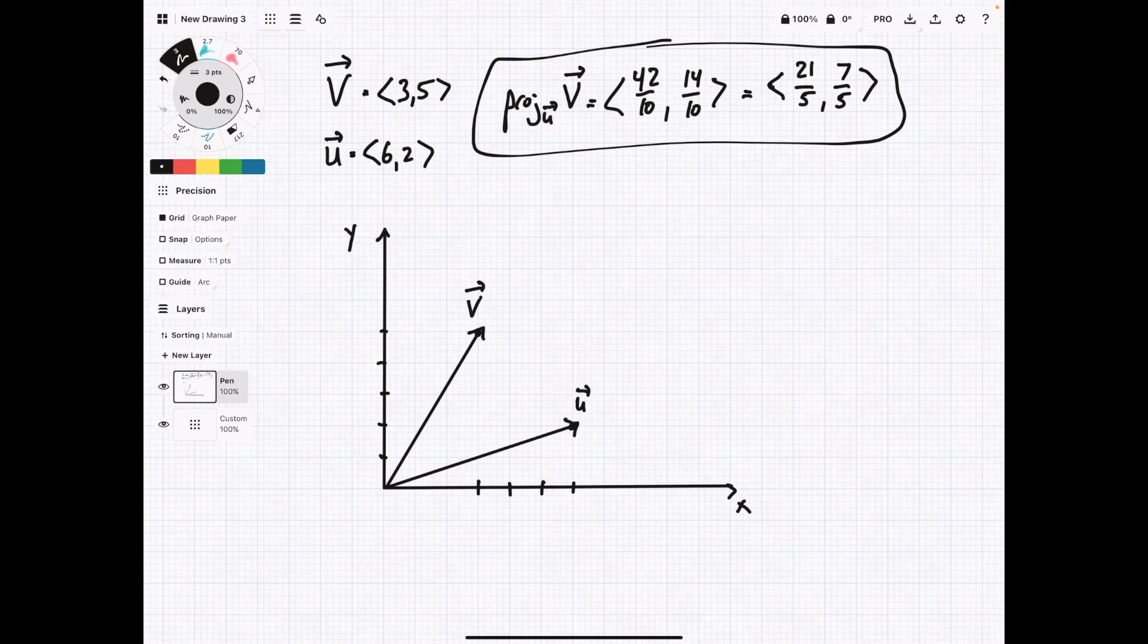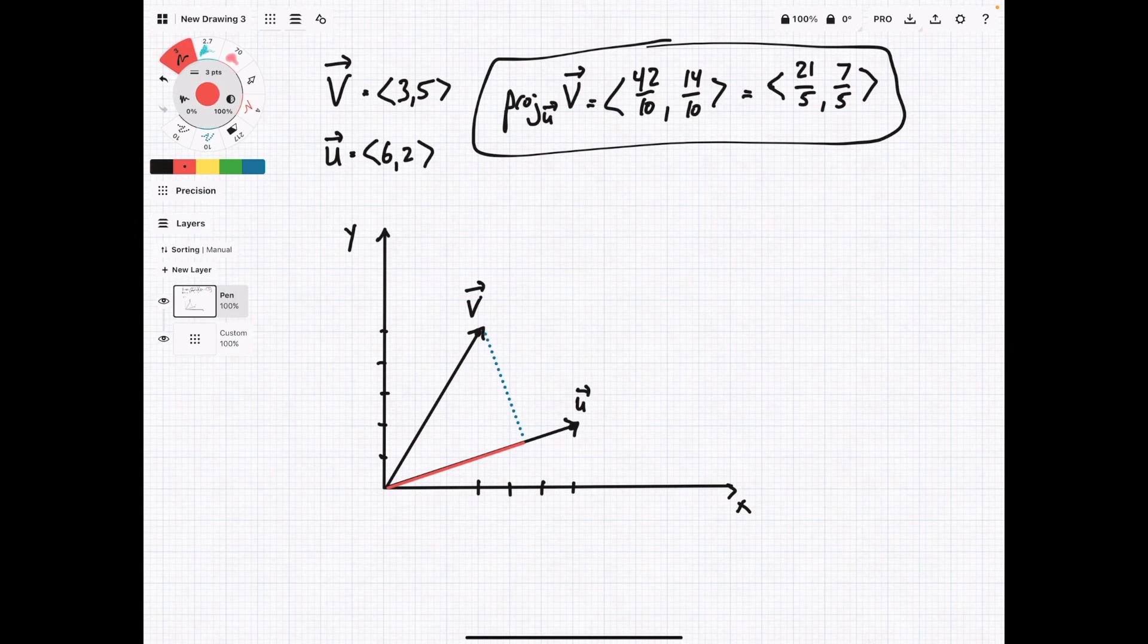Okay, and so we are projecting v onto u, so we can imagine, if I just do an approximation, that it would look something like this. And this new projected vector that we just formed is going to be in red. And our answer was that it was 21 over 5, and then 7 over 5. So this is going to be around 4, and then this one's going to be just a little over 1, so 1.2 or something.